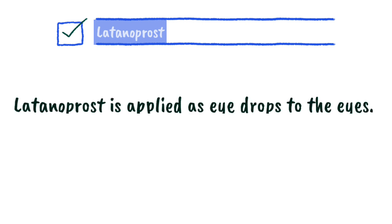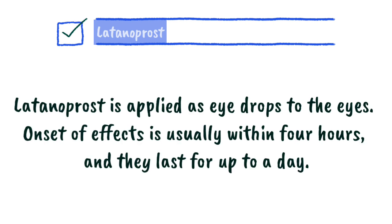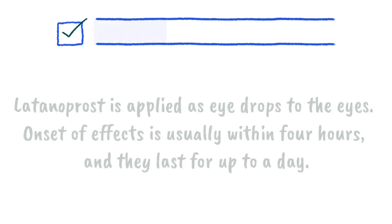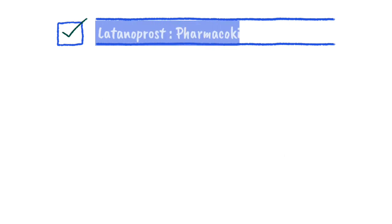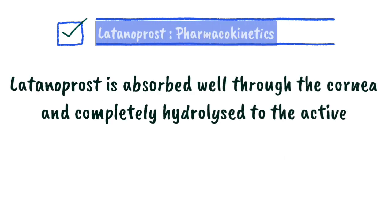Latanoprost is applied as eye drops to the eyes. Onset of effects is usually within four hours and they last for up to a day. Regarding pharmacokinetics, latanoprost is absorbed well through the cornea and completely hydrolyzed to the active latanoprost acid.